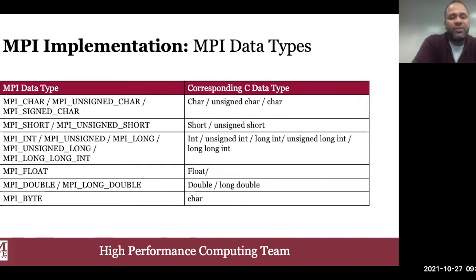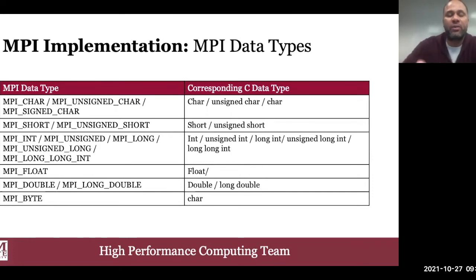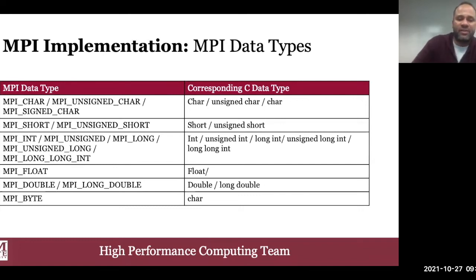In order for two processes to exchange data, both must agree on the type of data that would be sent or received. MPI provides several elementary data types shown in a table along with their corresponding C data types. Basically, those data types can be used to send textual messages or numerical messages.